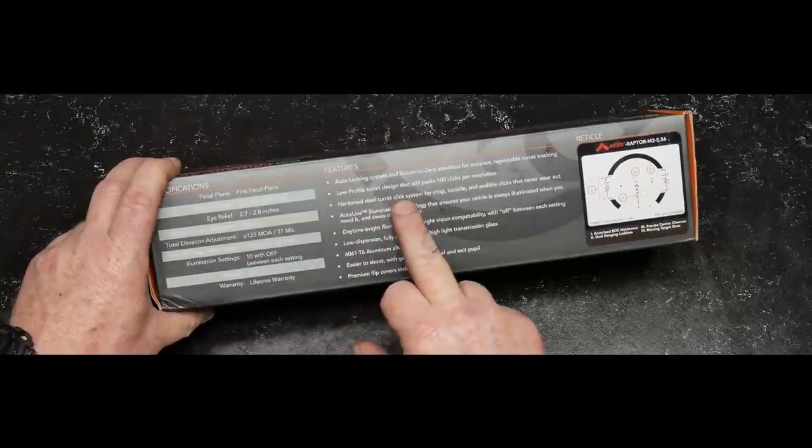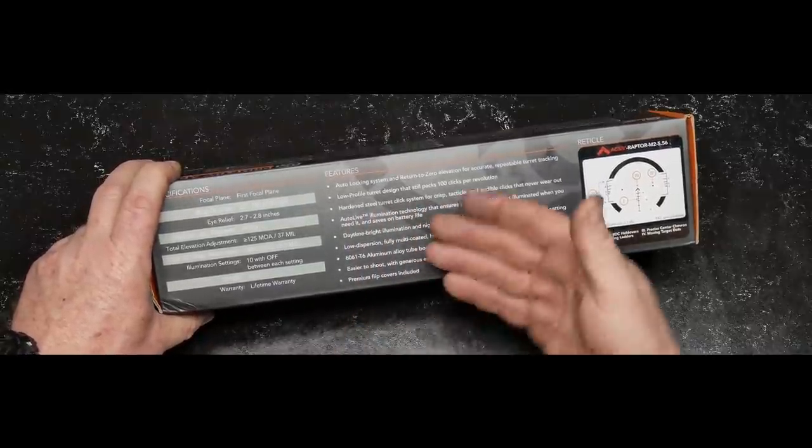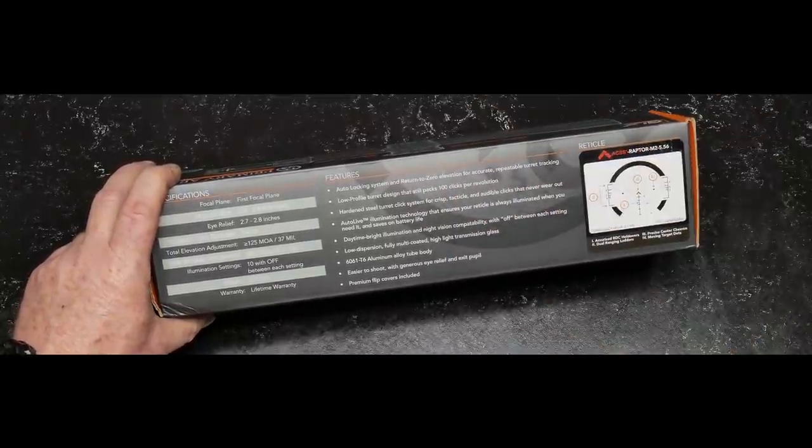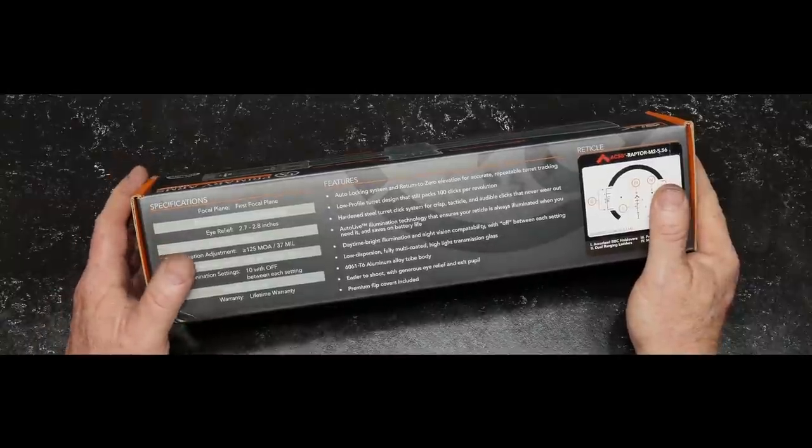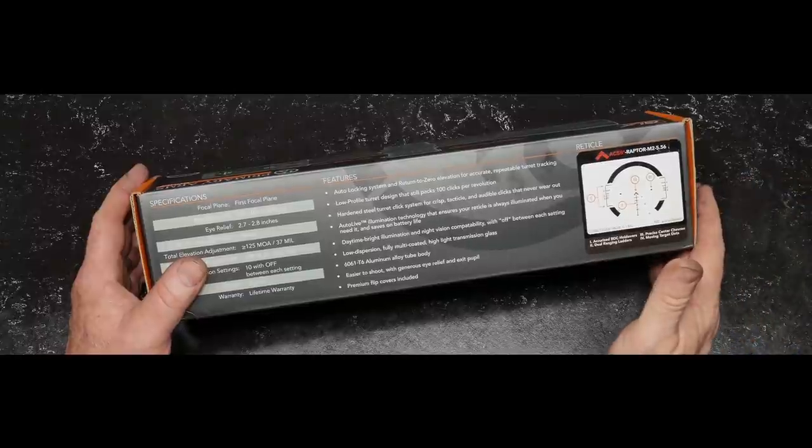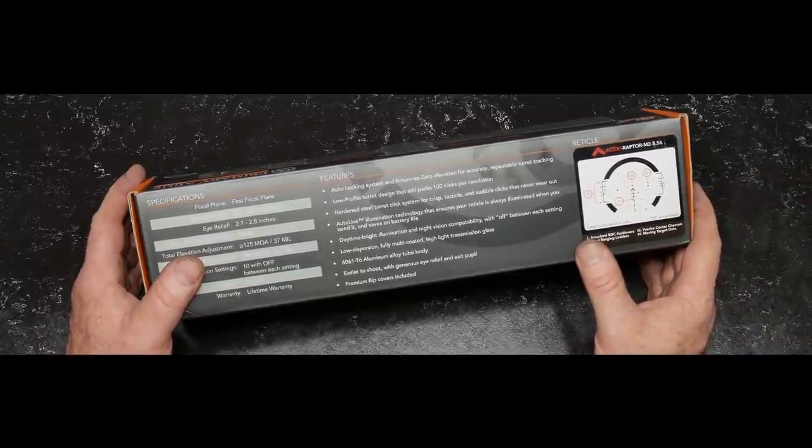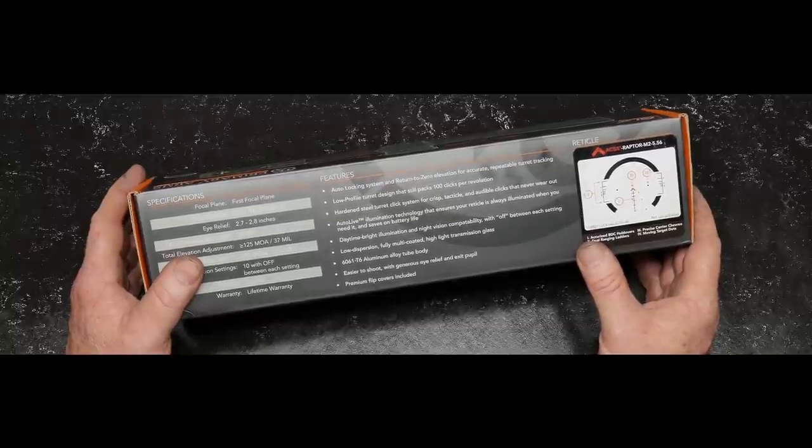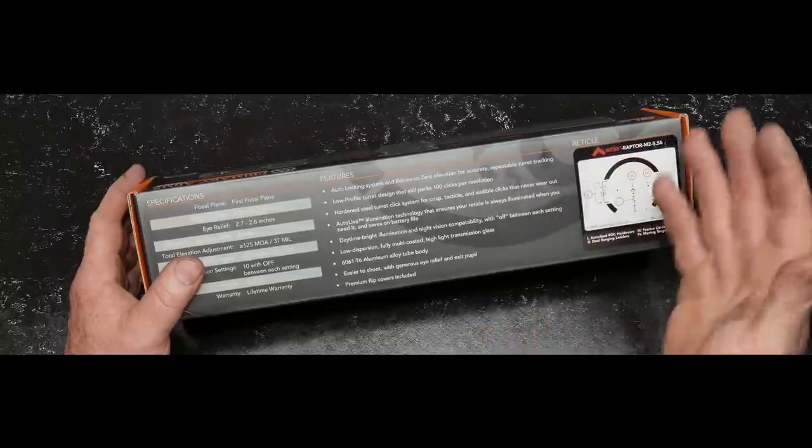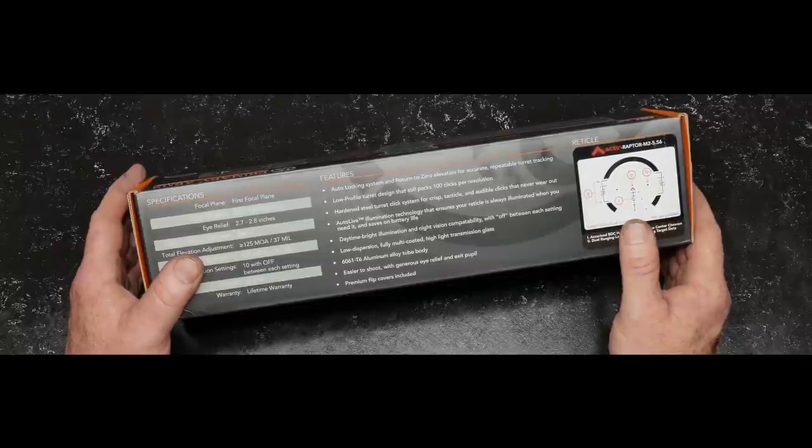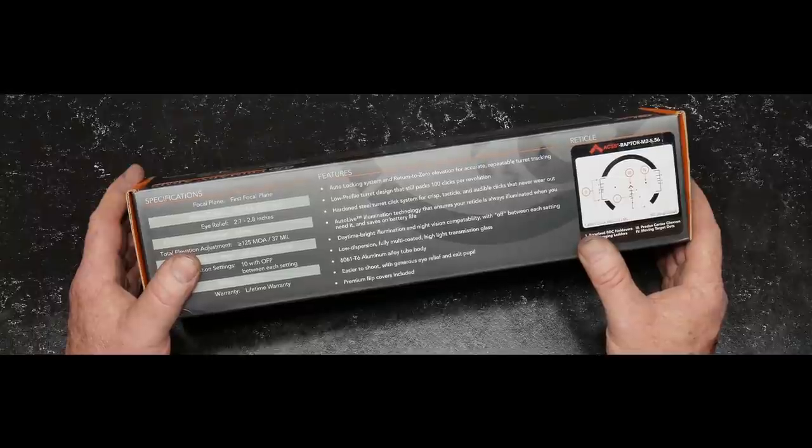Illumination settings, 10 with off between each setting. It weighs 22.2 ounces. Lifetime warranty, guys. Auto locking system and return to zero elevation for accurate and repeatable turret tracking. Low profile turret design that still packs 100 clicks per revolution. And it's in mils, 10th mils. Hardened steel turret click system for crisp, tactical, and audible clicks.